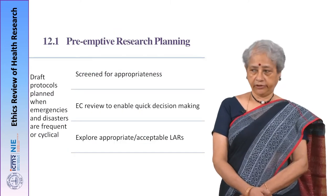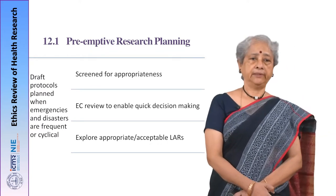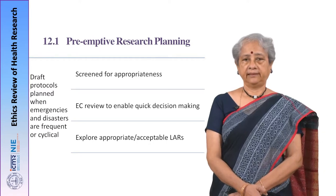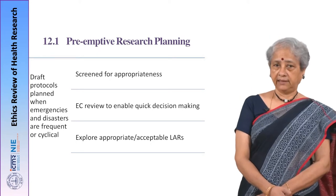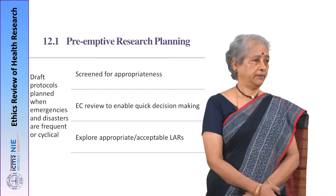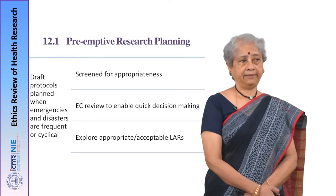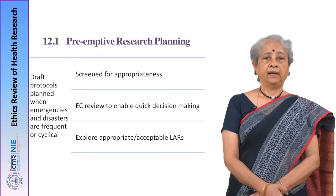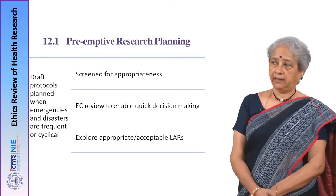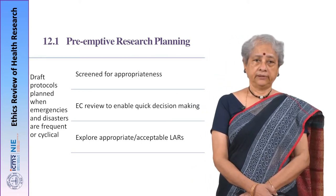The first point is about preemptive research planning. These emergencies and disasters can happen at frequent intervals or they can be cyclical in nature — for example, cyclones, which we know will happen at such and such time. The proposals that are actually in draft stage should be screened for appropriateness suiting that particular situation. The ethics review is to enable quick decision making and not lose time in the review process. One will also have to explore who could be the appropriate and legally authorized or acceptable representatives for consent taking.